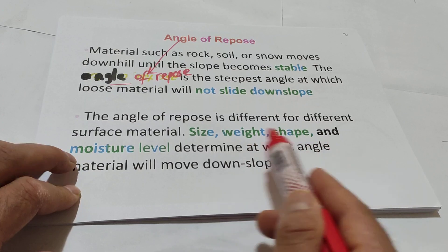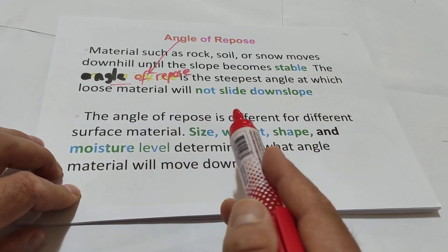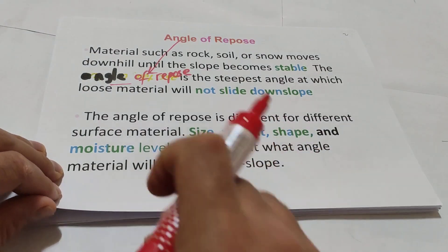Size, weight, shape and moisture level determine at what angle material will move downslope.